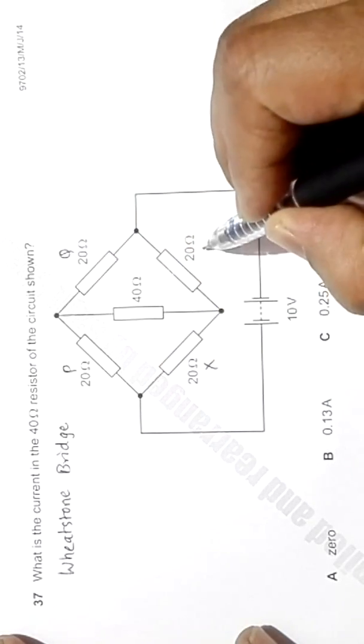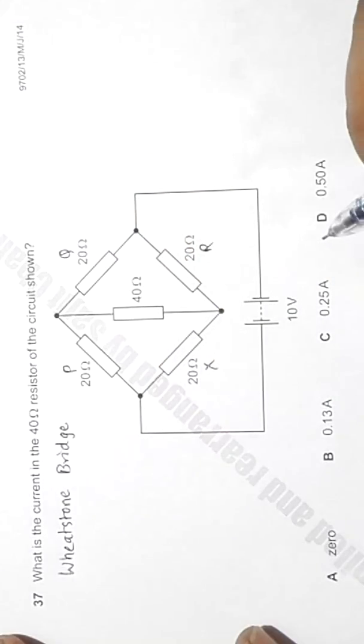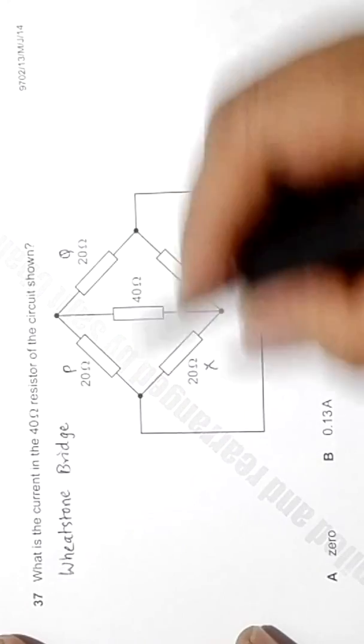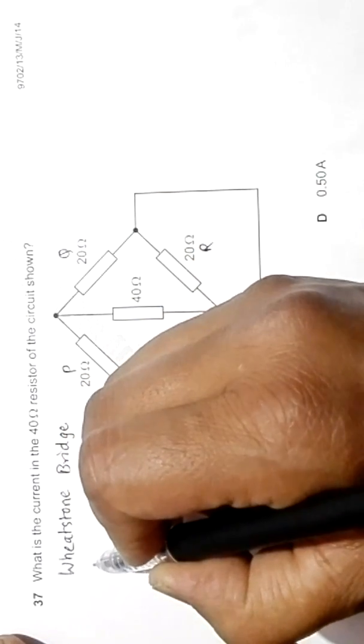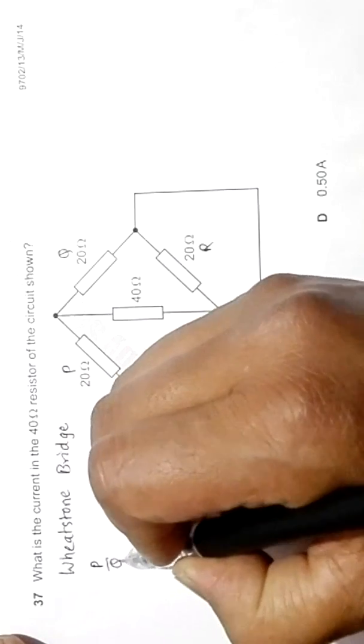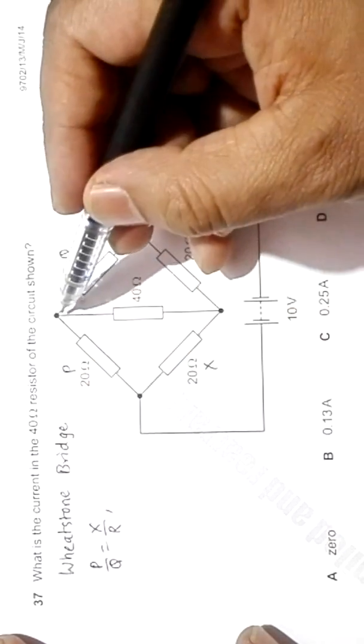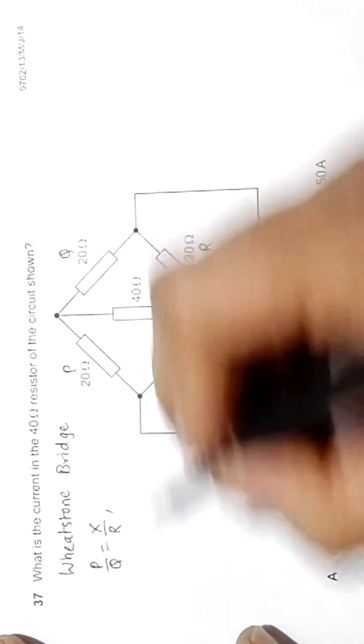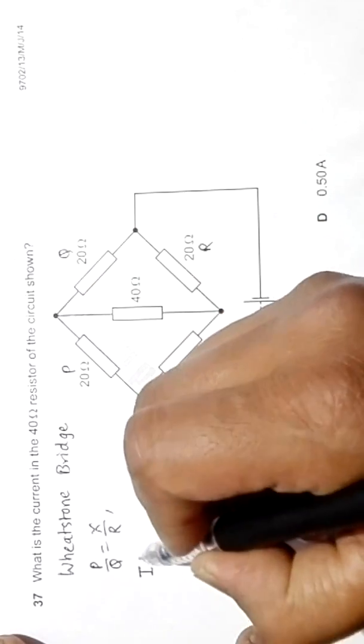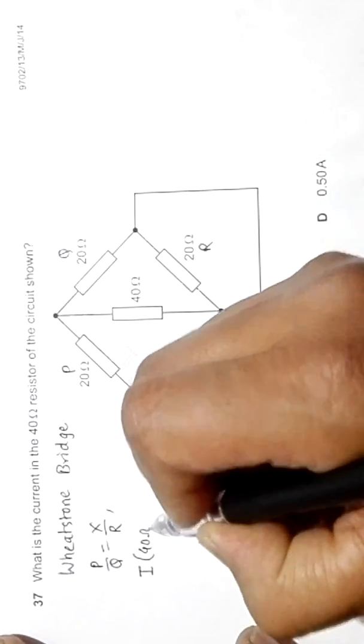This by X and this by R. So when we have the ratio equal, if P by Q is equal to X by R, then the current in this middle is 0. That means current through this 40 ohm resistor is equal to 0.